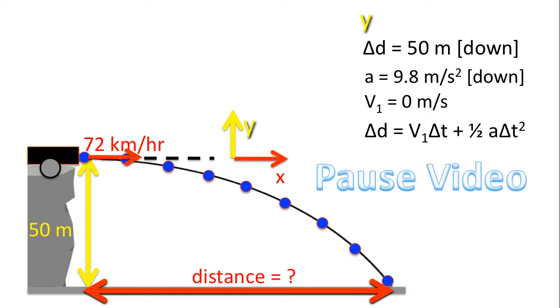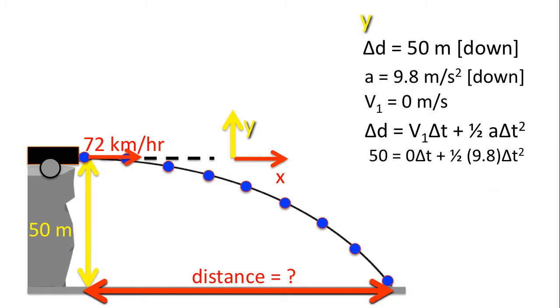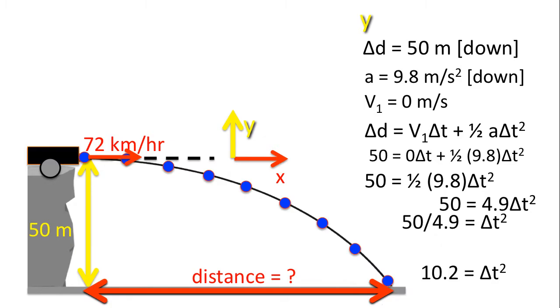Here's our displacement formula. Please now pause the video and try to solve for time. I hope you've tried this. Substituting our displacement and our acceleration. Continuing on with the math. Multiplying half of 9.8. Dividing by 4.9. We end up with this answer for time squared. And here's our time.